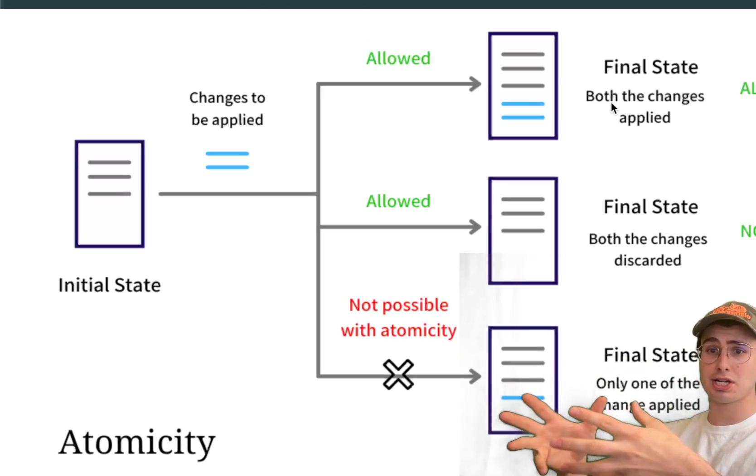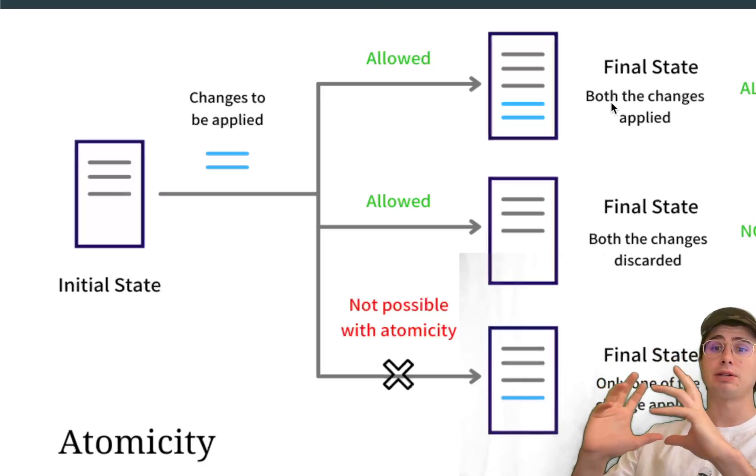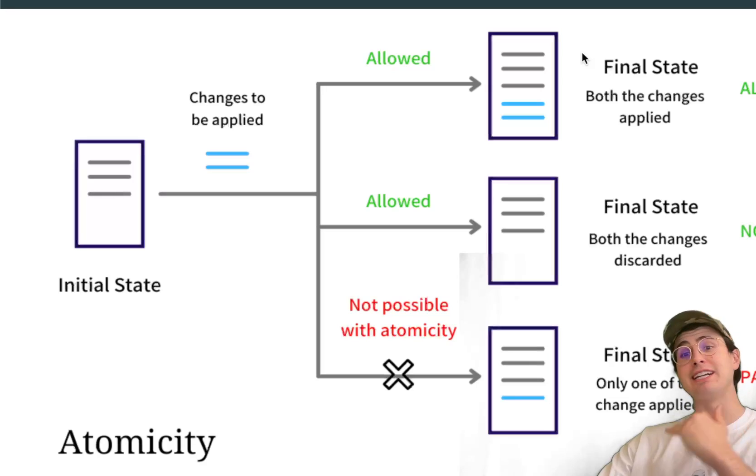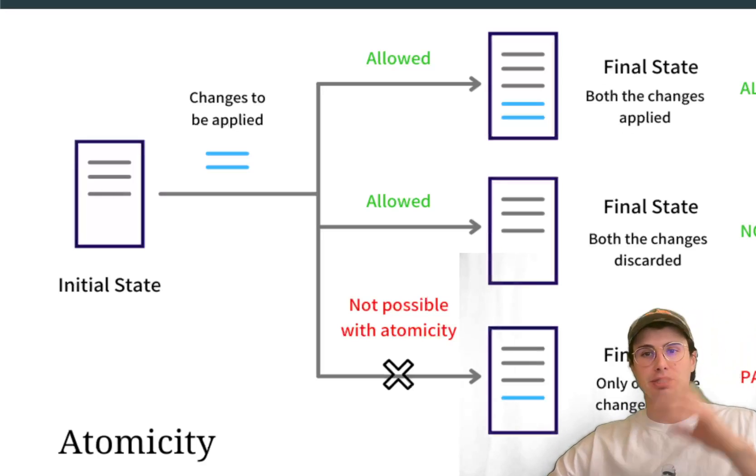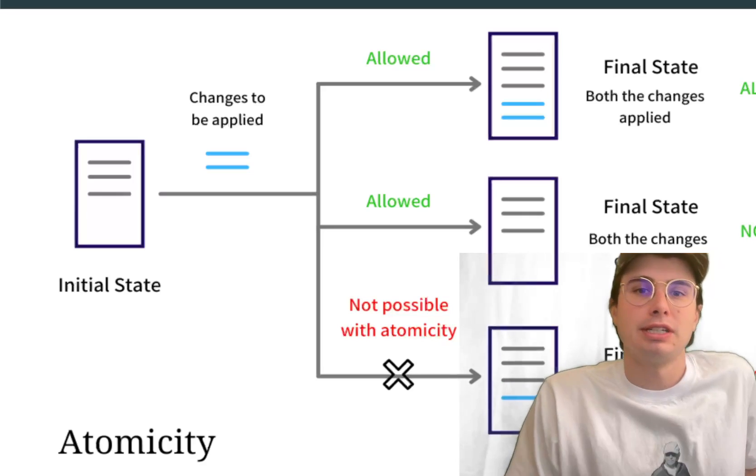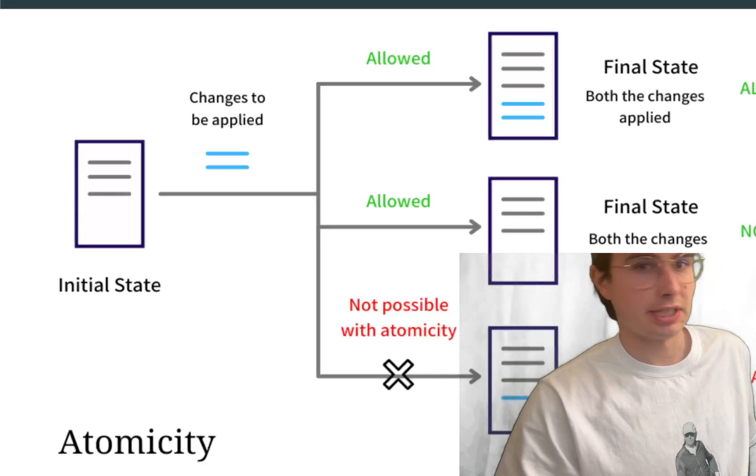You can either have a final state where both the changes are applied or a final state where none of the changes were applied. You cannot have a final state where only one of those changes is applied. So just think of that when you're thinking of ACID databases, that's kind of the dividing line between making something possible and not possible is you can't have these incomplete data entries at all.